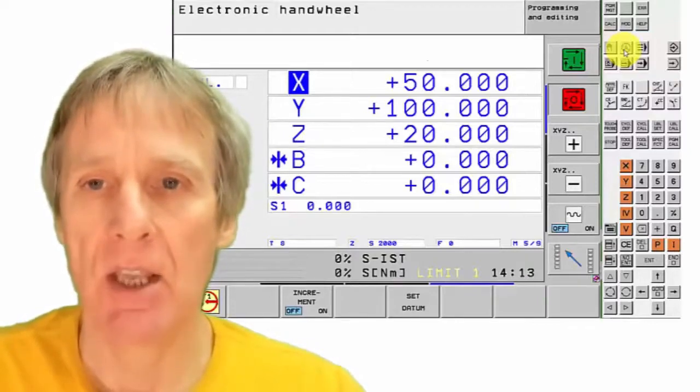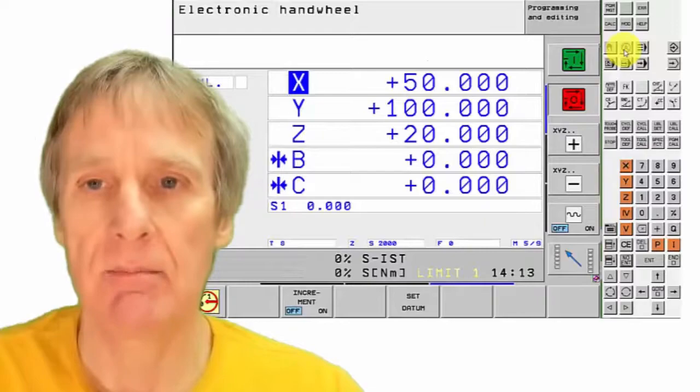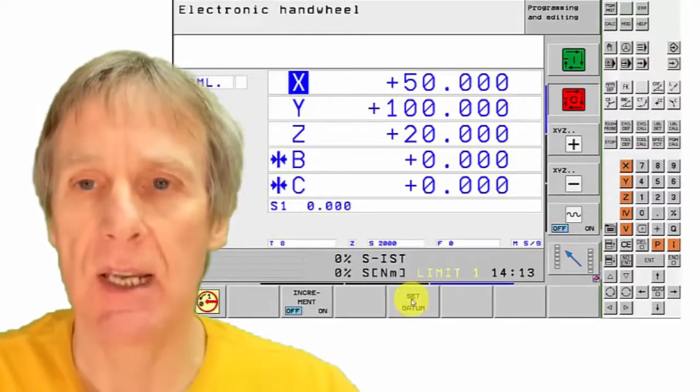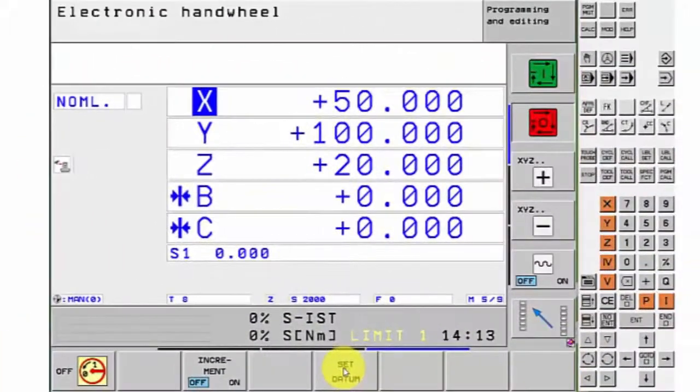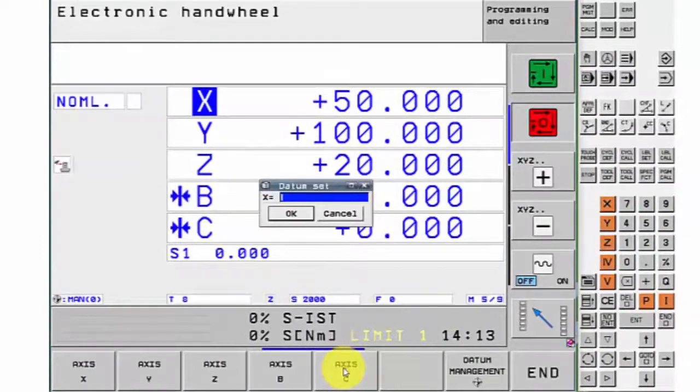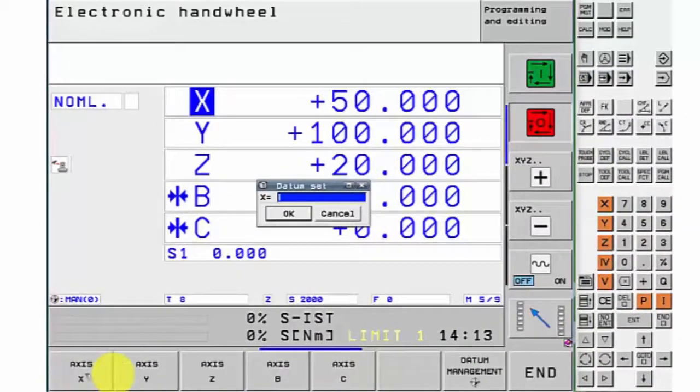You move it to where you want to set your datum. We then click this soft key that says set datum. It then brings up this next screen and you can select which one you want to set first.